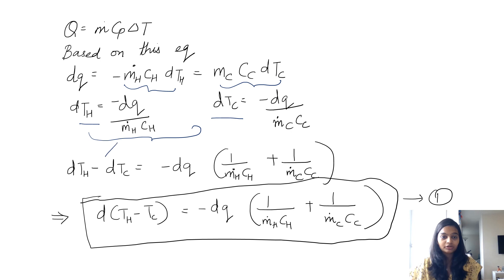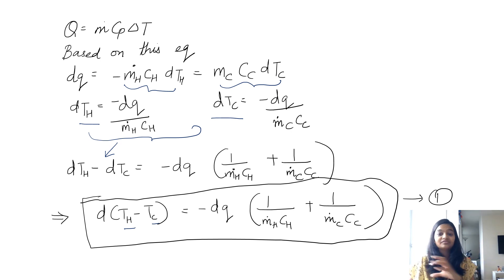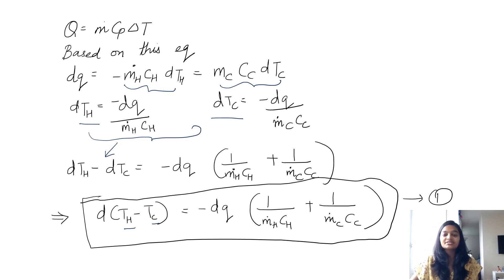Taking the difference between both, we find that the difference between the hot and cold fluid temperatures at any point in the heat exchanger is equal to the heat transferred multiplied by the reciprocals of the heat capacities MH CH and MC CC. This is our first equation.